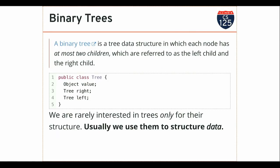Trees in computer science are a broad category of data structures. In this class we're going to focus primarily on a single subtype called a binary tree. In a binary tree, each node can have at most two children — a right child and a left child, depending on where they are in the picture.